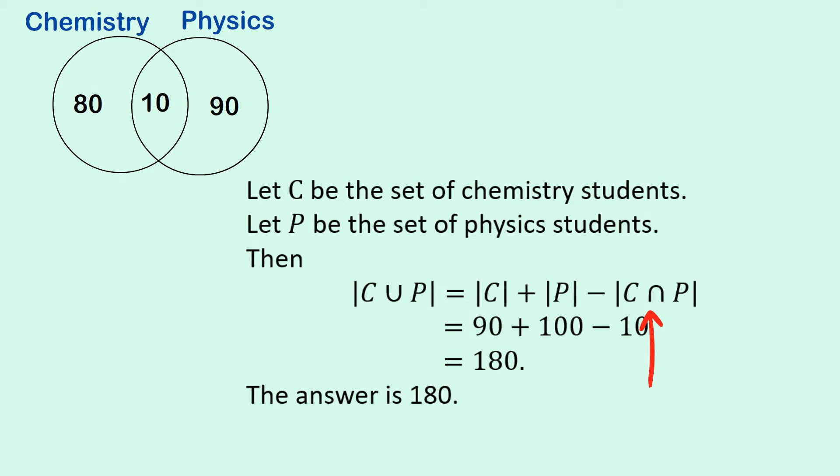That's that middle area that we saw before where you need to take that off, because you've double-counted it. If you look up here, you can see if I count everything in C and everything in P, then I've double-counted what's in C and P. And so I have to take that off. And so that gives me the same answer of 180.